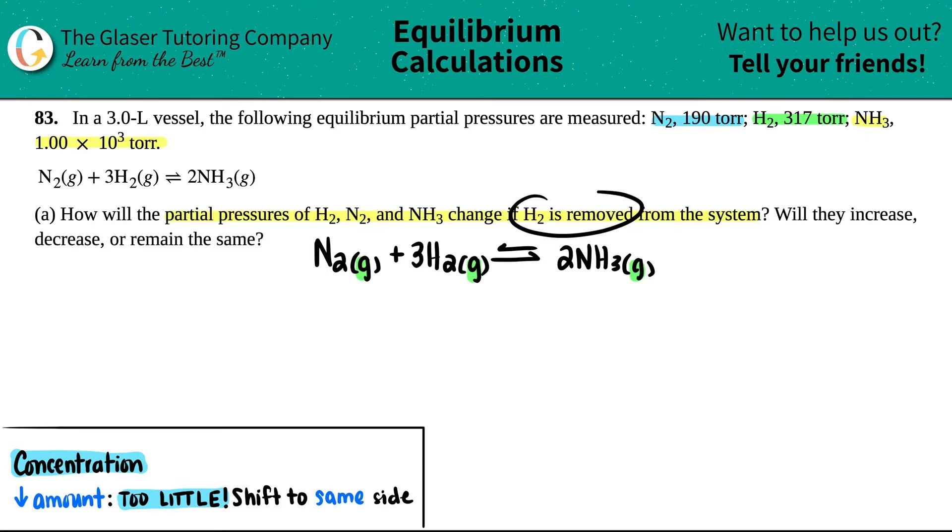And you have way too little, right? H2 is being removed. So here's H2 in the balanced equation. I know that this is going to drop. But now the question is, because of this drop, which reaction is going to take over? Is the forward reaction going to work, or the reverse reaction?